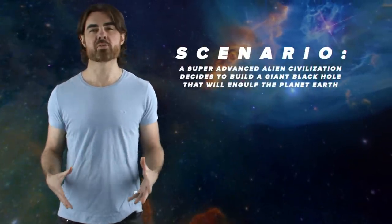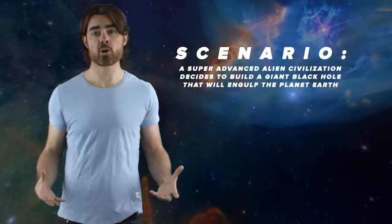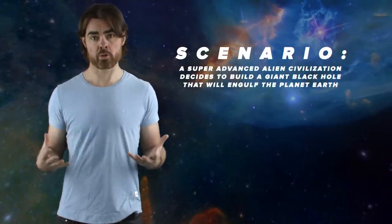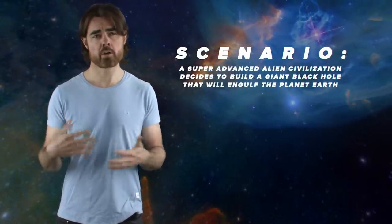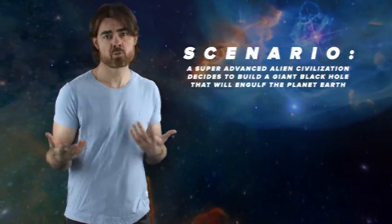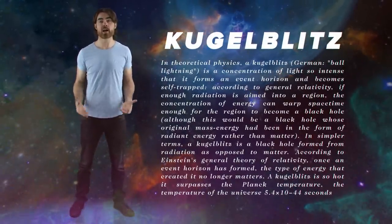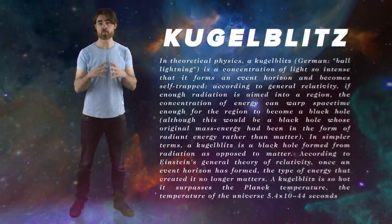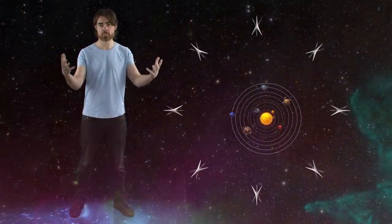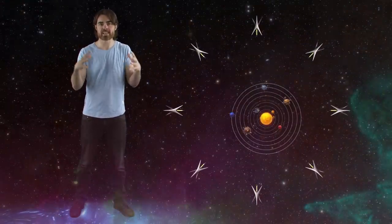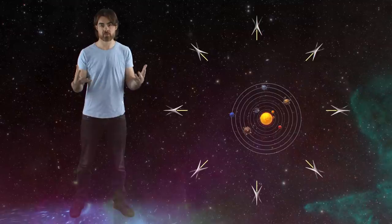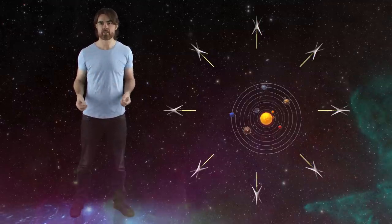A super advanced alien civilization decides to build a giant black hole that will engulf the planet Earth. It doesn't matter why. I don't know, they're light years away. Maybe they just saw the first Star Wars prequel. So these guys plan to destroy the Earth with a kugelblitz, a black hole formed entirely from light. Their spaceships form a sphere around the solar system and blast a pulse of light inwards. This gigantic shell of light is centered on the Earth and will reach us in about a day.